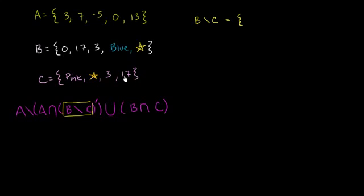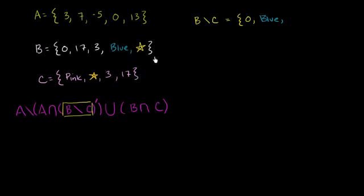The relative complement of C in B — or B minus C — is all the stuff in B with all the stuff in C taken out. B has a 0; C does not have a 0, so we don't take out the 0. B has a 17; C has a 17, so we take out the 17. B has a 3, but C has a 3, so we take that out. B has a blue; C does not have a blue, so we leave the blue in. B has a gold star; C also has a gold star, so we take it out. So the relative complement of C in B is just the set containing 0 and blue.